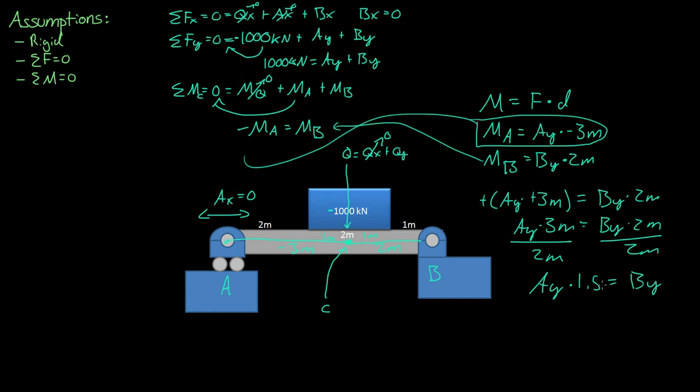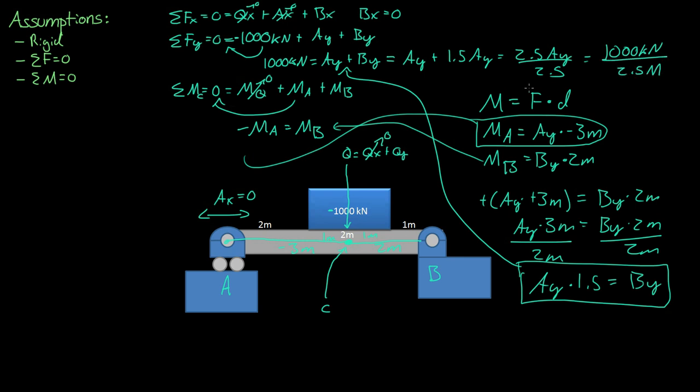So By is 1.5 times bigger than Ay. If we use this equation and plug it into the force equation, that becomes Ay plus 1.5 Ay, which equals 2.5 Ay. If we divide by 2.5, then that's 1000 kilonewtons divided by 2.5,